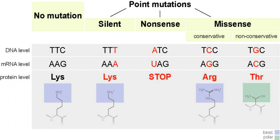Nonsense mutations include stop gain and start loss. Stop gain is a mutation that results in a premature termination codon — a stop was gained — which signals the end of translation, causing the protein to be abnormally shortened. The number of amino acids lost mediates the impact on protein functionality. Stop loss is a mutation in the original termination codon where a stop was lost, resulting in abnormal extension of a protein's carboxyl terminus.